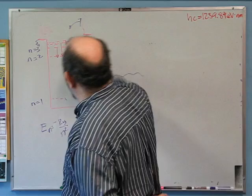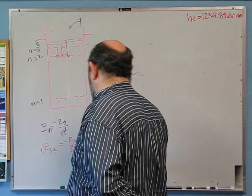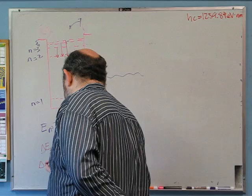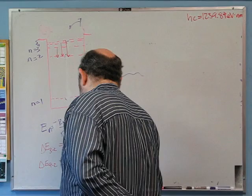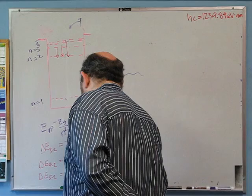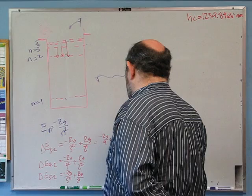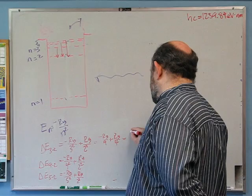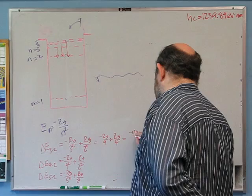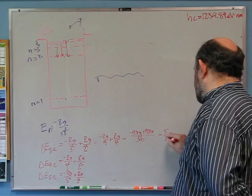I want to calculate the transitions from n equals 3 to 2, n equals 4 to 2, n equals 5 to 2. The delta E values are: delta E (3 to 2) equals minus Ry/9 plus Ry/4, which with a common denominator of 36 gives 5Ry/36. Delta E (4 to 2) equals minus Ry/16 plus Ry/4, which with common denominator 16 gives 3Ry/16. Delta E (5 to 2) equals minus Ry/25 plus Ry/4, which with common denominator 100 gives 21Ry/100.